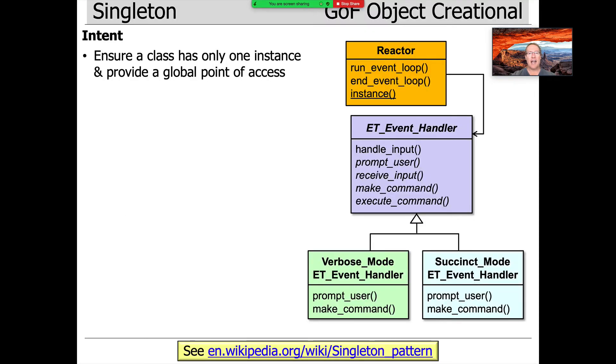The intent of the pattern, as per the Gang of Four book, is to ensure a class has only one instance and provide a global point of access to that one instance.